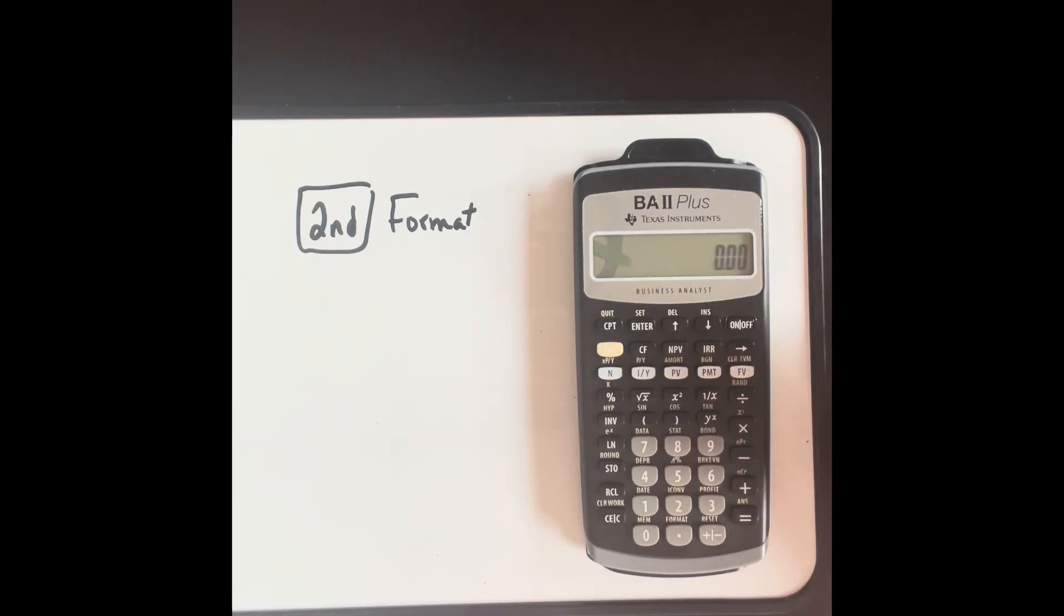Let's start by turning our calculator on, and you will notice that the display is 0.00. That's because the default setting for this calculator is to always round off to two decimal places.